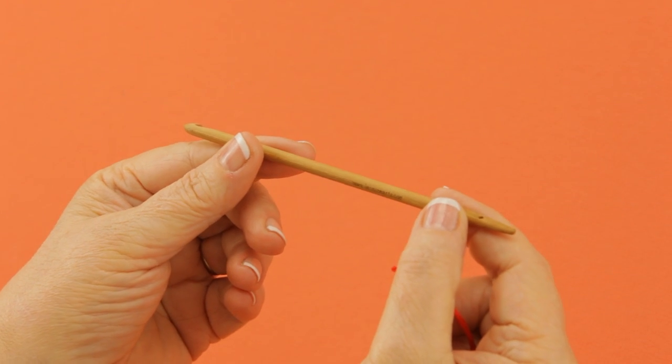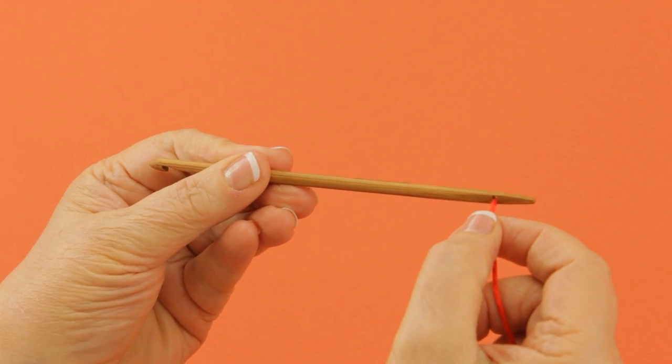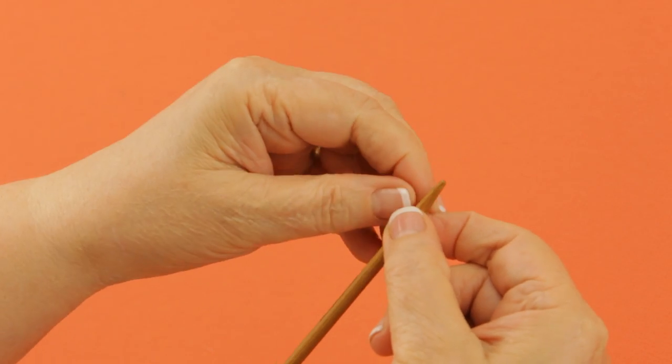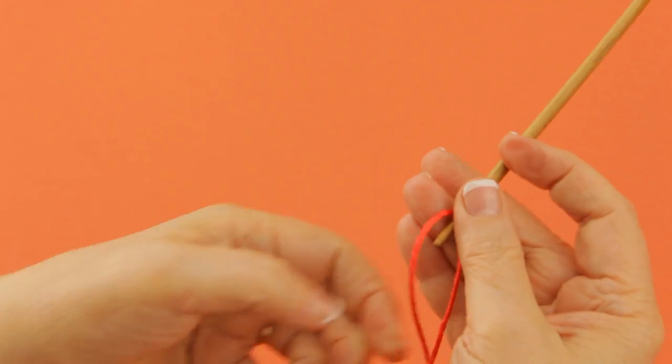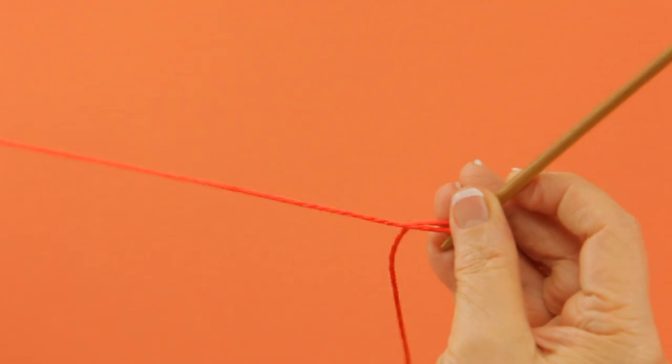The first thing you need to do when you get your nook is to thread the cord through the hole at the end. Leave about six inches and you're ready to nook.